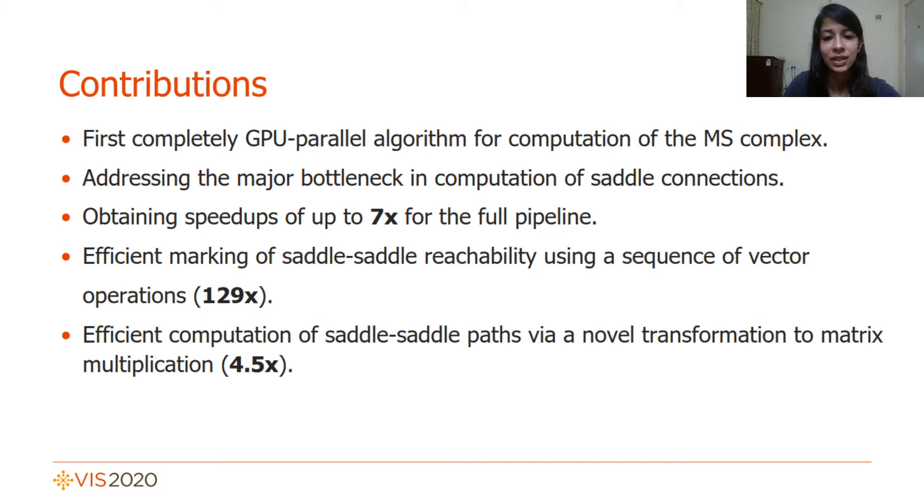We do this by targeting the major bottleneck of saddle path computation. First, we introduce a novel technique to mark saddle reachability by utilizing vector operations. Next, we present an algorithm to count paths between saddles by leveraging matrix multiplication based graph traversal.